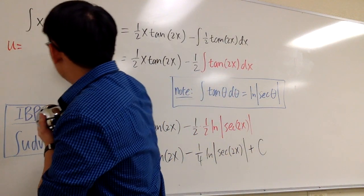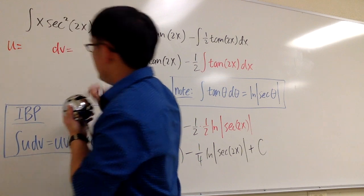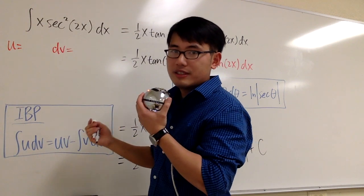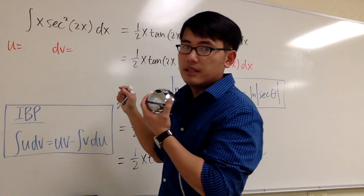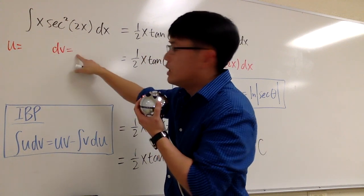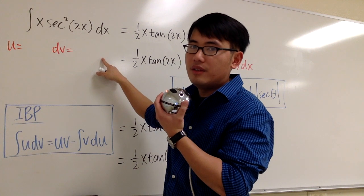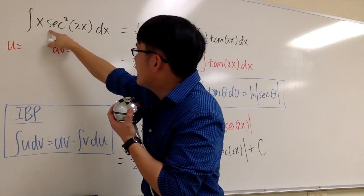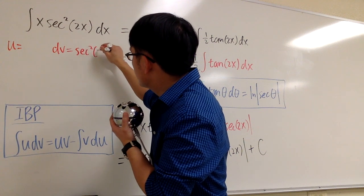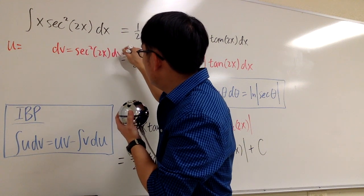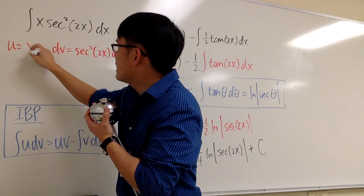So pick something for u, and then something for dv. We have two parts, namely x, and then the second part is secant squared of 2x. Let's worry about what we should pick for dv, because it's harder to integrate dv. In this case, we can actually integrate secant squared 2x, so I'm going to choose that, secant squared 2x dx, and then I will pick x for u.